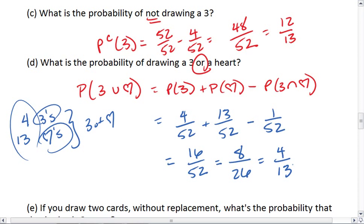It's really important that you remember to subtract out that overlap. So if I were to actually write this out, my 3s are the 3 of hearts, the 3 of diamonds, the 3 of clubs, and the 3 of spades.